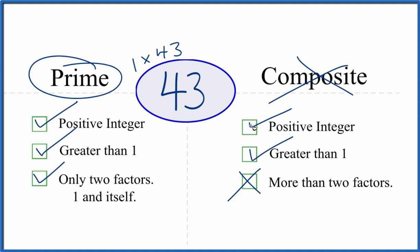This is Dr. B answering the question whether 43 is a prime number or a composite number. It's prime. Thanks for watching.